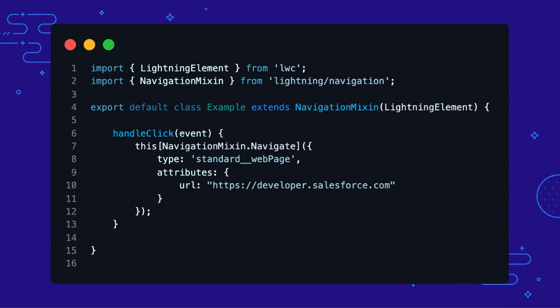Let's start with the Lightning Navigation Service first — what it is and why you should use it. The Lightning Navigation Service is an abstraction layer that ensures URLs will always be consistently constructed and called. We look here at a basic setup: at the top, we import the Navigation Mixin function from the Lightning Navigation module. To use it, we apply the function to our component's base class, and then we can use the Navigate method of the Mixin to navigate to another page. The object passed to the Navigate method is called a Page Reference, which we will explore later in detail.